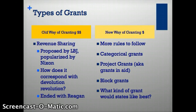Types of grants. The old way of giving money is revenue sharing. Revenue sharing was when the federal government gave a lump sum to the states and local governments and told them to share it. It was proposed by Lyndon Baines Johnson and popularized by Nixon. Basically, it's giving the states money and then the states get to decide how they're going to use it and how much they're going to devote to particular services.